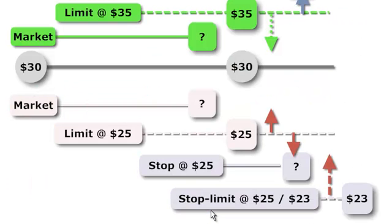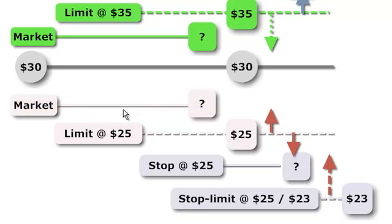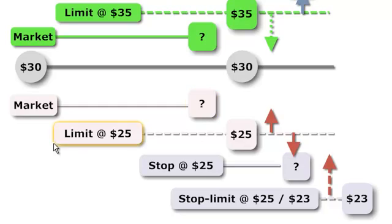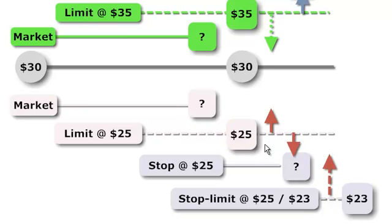The same four order types apply on the sales side. Here we're selling, and keep in mind, if we're selling, then a better price to us is a higher price. The market order will get filled — we're guaranteed that it'll get executed, but we're not quite guaranteed what the sales price will be. Current price is $30; we could end up selling at $30 or at $29.50, for example. The limit here at $25 says we are willing to sell at $25 or better, so we'll sell for $26, $27, $28, et cetera. However, if the bid ask spread only gets to $24, that's not better.